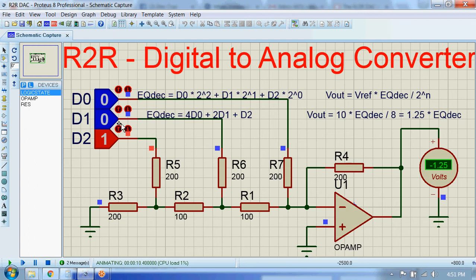When it's 001, this decimal equivalent is 0 + 0 + 1, which will be equal to 1. Then the output voltage will be 1.25 times 1, which will give us 1.25 volts. You can see the same on this voltmeter. Here you can see a minus sign because this op amp is used in inverting mode.